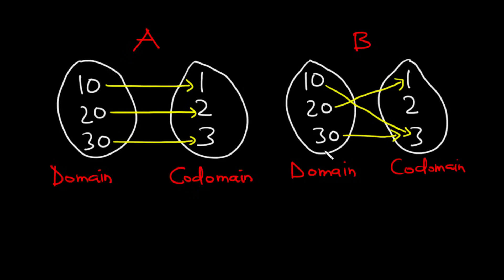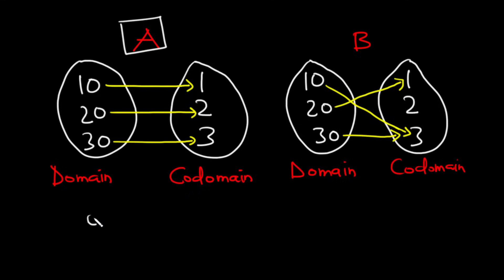However, for diagram B, it is clear that 10 and 30 both map to 3, and then 20 maps to 1. Since we have elements in the domain corresponding to distinct values in the codomain for diagram A, it makes the function one-to-one. So diagram A is one-to-one, but diagram B is not one-to-one.